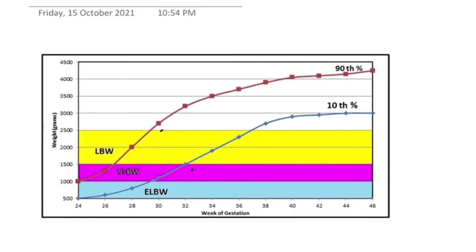Welcome back to the channel. Today's topic is obstetric — we are going to discuss how to differentiate IUGR from small for gestational age babies. The basic difference is that small for gestational age babies are constitutionally small; they are just genetically small because their parents are small. IUGR, on the other hand, is a pathological condition where the baby is growing smaller due to intrauterine growth restriction.